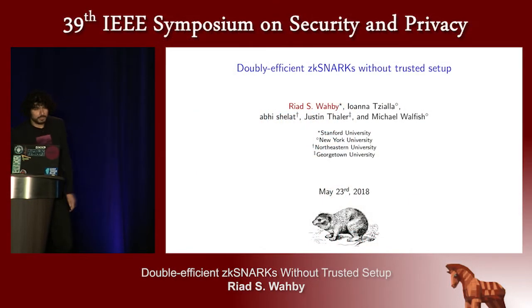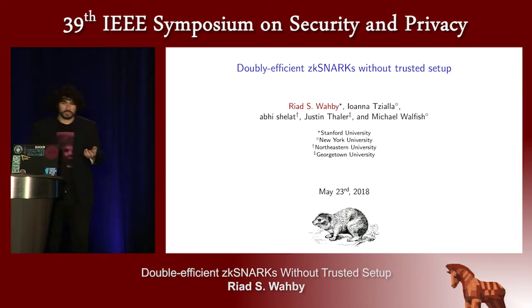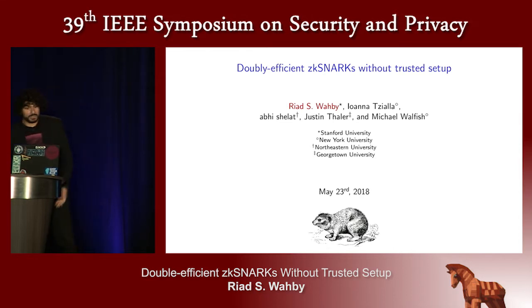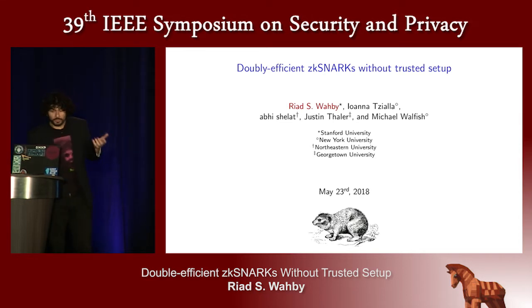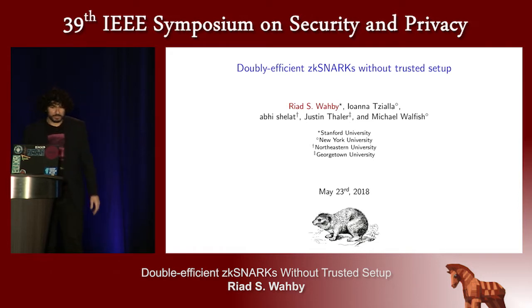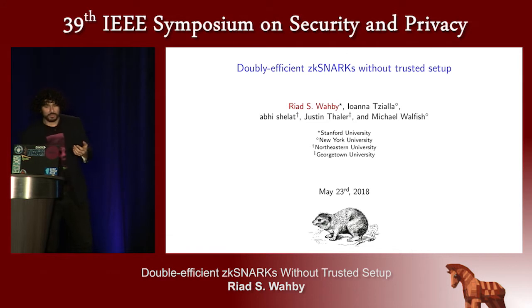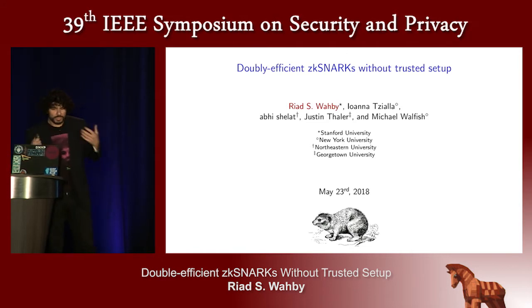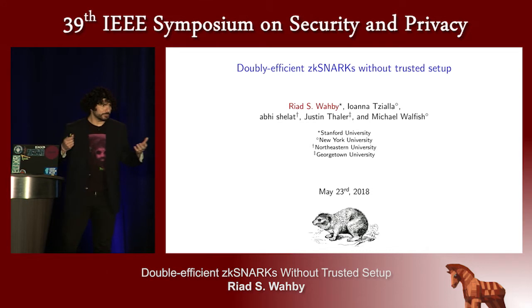In the last decade, we've seen significant research interest on bringing the theory of probabilistic proofs to practice in the form of built systems. And even in the last two or three years, that interest has spread to the broader tech community, especially in the cryptocurrency space. I'm going to tell you about the work that my coauthors and I did on designing a new kind of ZK snark, but I'm also going to try and give you a more general picture of the research area.